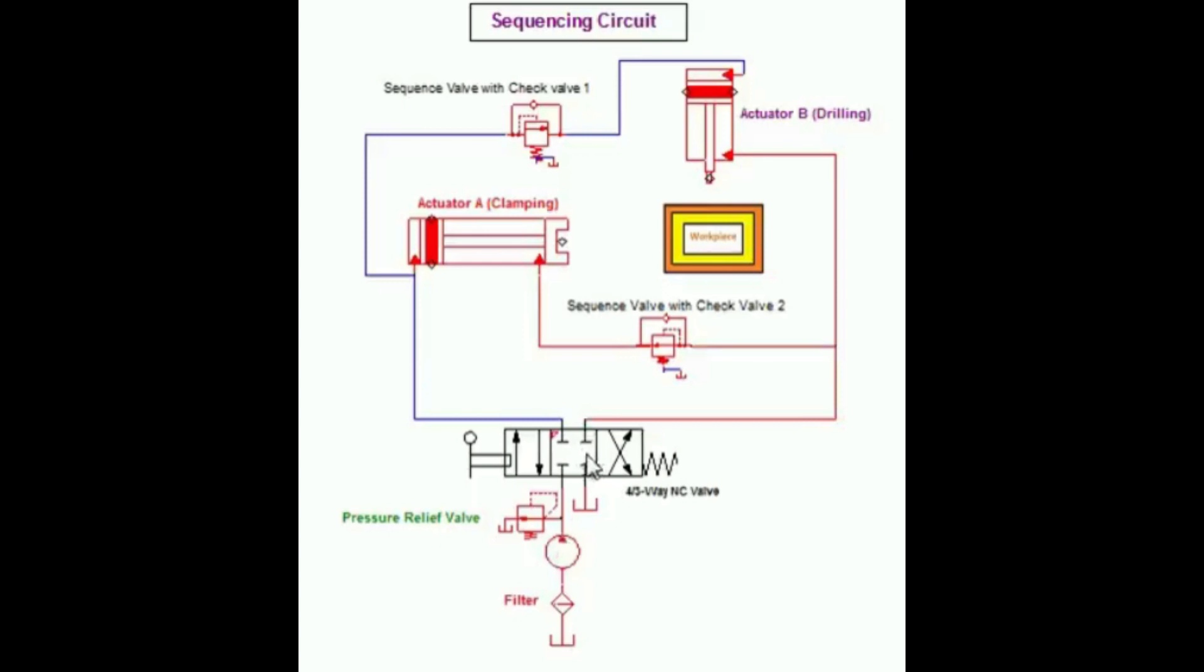of the circuit until the clamp cylinder has reached the end of stroke. When the clamp cylinder extends completely, the pressure rises and opens the sequence valve, thus allowing the drilling cylinder to extend.